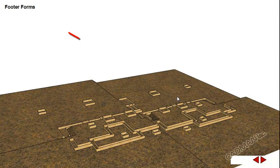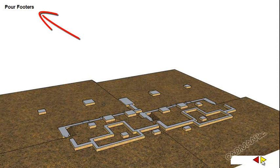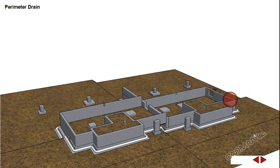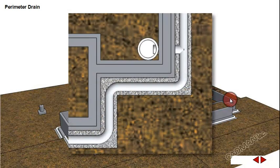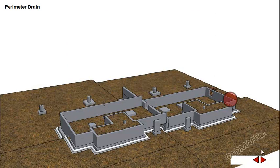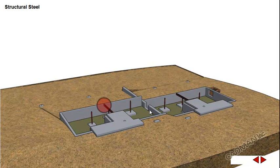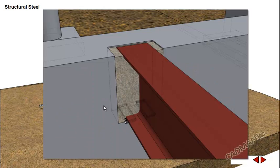As you move along the timeline, each step is labeled. Callouts expand when the mouse moves over them, allowing you to show more detail in a callout.